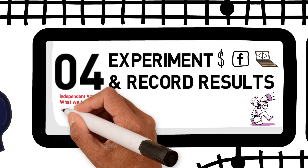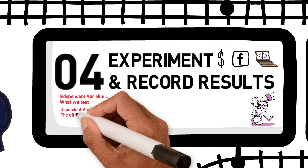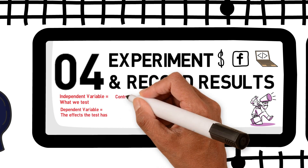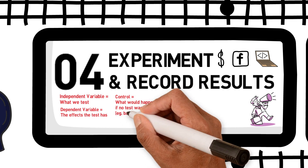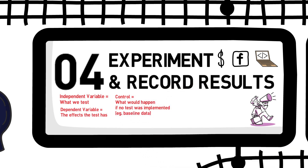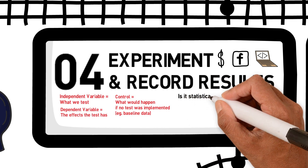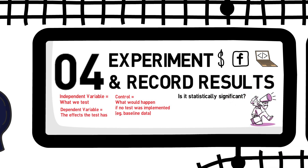Two is a dependent variable — that's what's changing because of the independent variable, like the number of sales made or the number of emails opened. And a control — this is what you use to see if there is a significant difference between what you usually do and the new thing you are doing. In business, we usually use baseline data for this. For example, how many sales were made using the old sales script versus the new ones? Sometimes our data sets will be too small to determine whether there is a statistically significant difference between our tests and our baseline or control — the difference could be explained by chance.